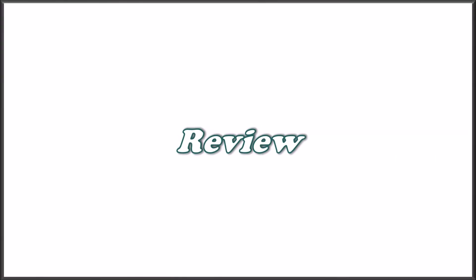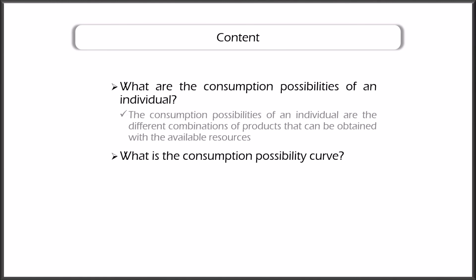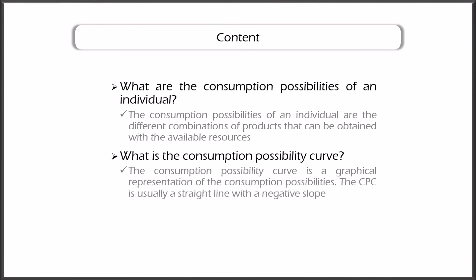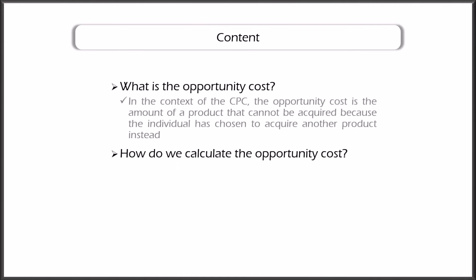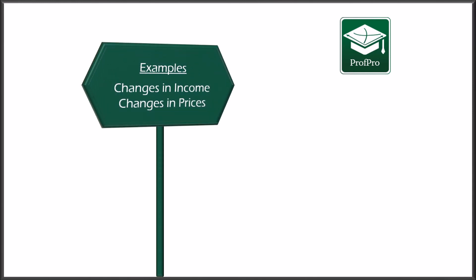To conclude, let's review the questions this class set out to answer. The consumption possibilities of an individual are the different combinations of products that can be obtained with available resources. The consumption possibility curve is a graphical representation of those possibilities, usually a straight line with a negative slope. The opportunity cost is the amount of a product that cannot be acquired because the individual has chosen to acquire another product instead. In the context of the CPC, the opportunity cost of the x-axis product equals the price of X divided by the price of Y; for the y-axis product, we take the inverse. If you found this video helpful and want to see more, you can find the following examples.